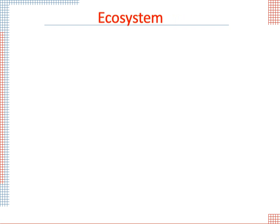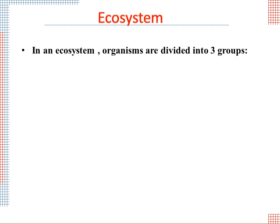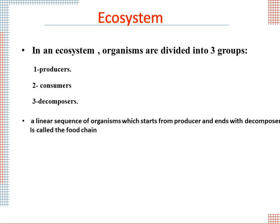In an ecosystem, organisms are divided into three groups: producers, consumers, and decomposers.